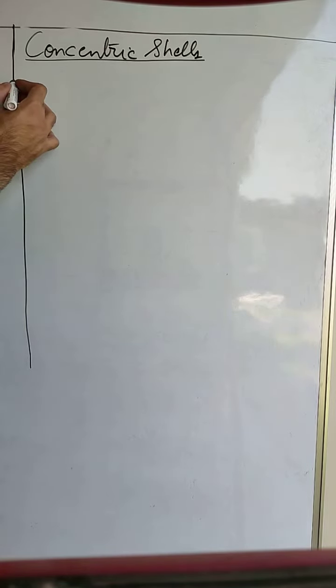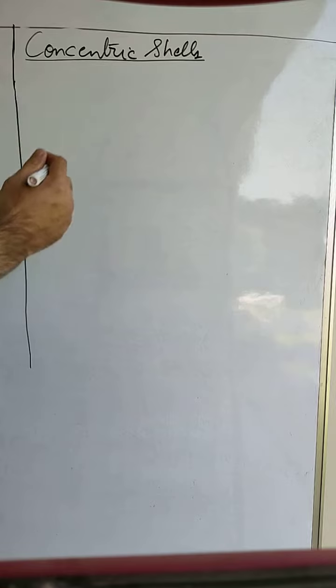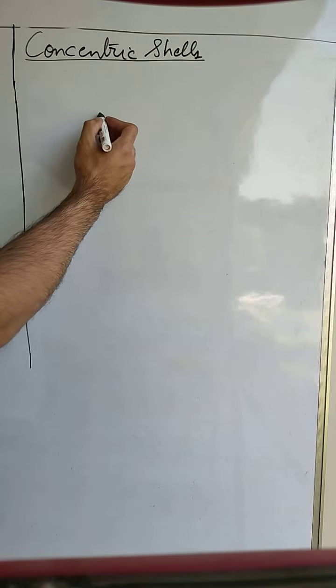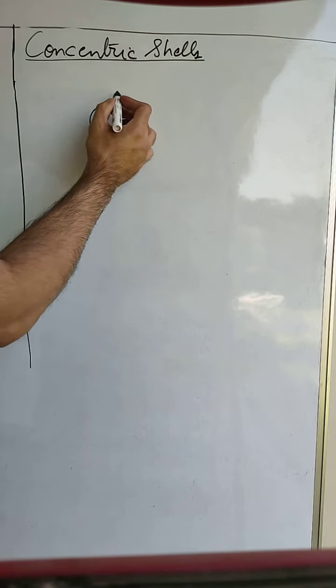In this video we will study another important concept: earthing of concentric shells. We have already studied earthing of metal sphere. Now what will happen if we have shells? So let us say we have two concentric shells.